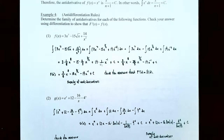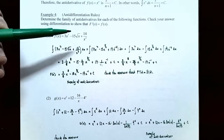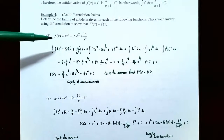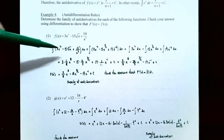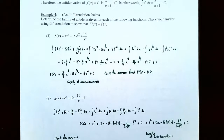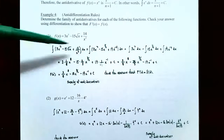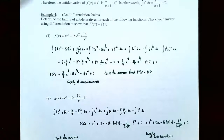Now let's use the antiderivative rules in an example. Example four: determine the family of antiderivatives for each function and check your answer using differentiation. Number one: f(x) = 3x^7 − 15√x + 14/x². We rewrite each term as a power of x: 3x^7 minus 15x^(1/2) plus 14x^(−2), then integrate with respect to x.